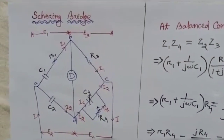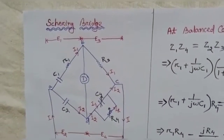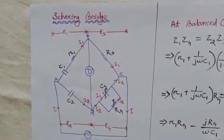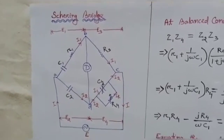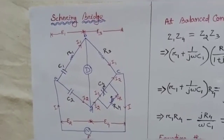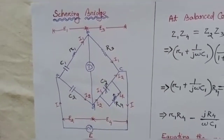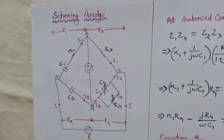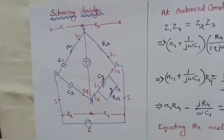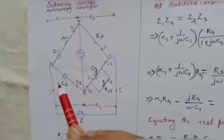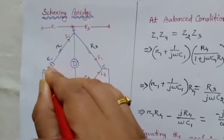Hello everyone. Today in this lesson we will study about the Schering Bridge. In this bridge we are measuring the unknown capacitance by comparison with a standard variable capacitor. Here this is the bridge circuit and C1 is the unknown capacitance whose value we have to measure.